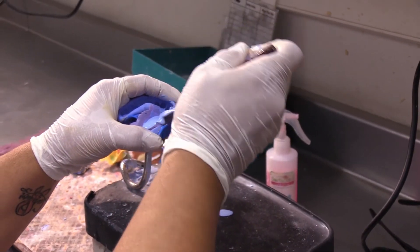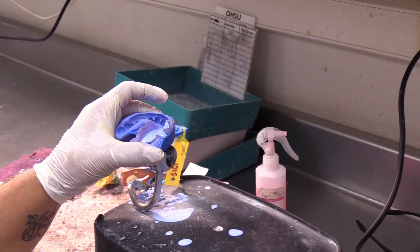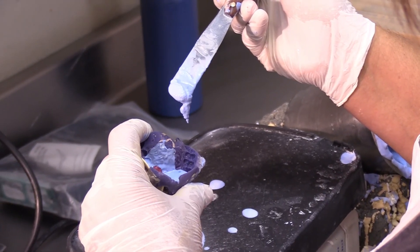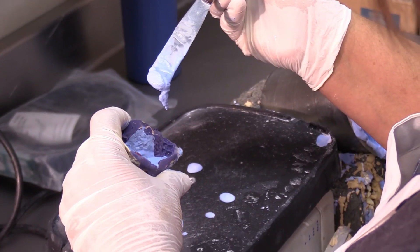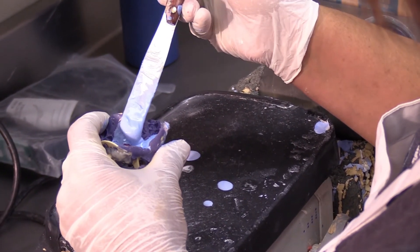To get good quality models, we use vibration tables when pouring the stone into the impression. That vibration allows the stone to easily flow into the impression while reducing the chance of creating voids in the model. Unfortunately, the vibration can also be strong enough to move the impression coping if sufficient retention doesn't exist.